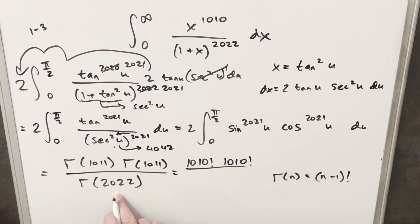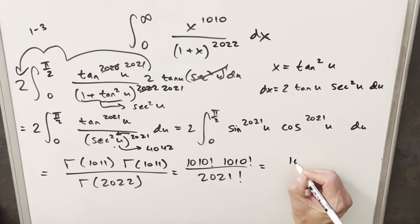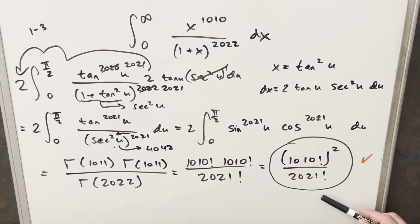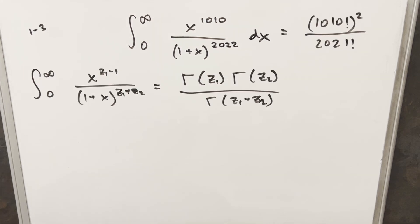And then with our denominator being gamma of 2022, same thing, we can write this as 2021 factorial. So if we want to get this in the same form that MIT has in their solution, I can write this as 1010 factorial squared over 2021 factorial. So this is going to be our solution. But before we end the video, what I want to do is just go over what I said at the beginning, which is that we could calculate this by a formula. So let's look at that real quick.